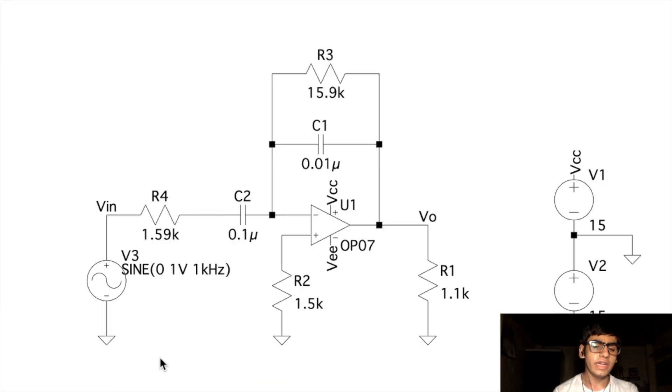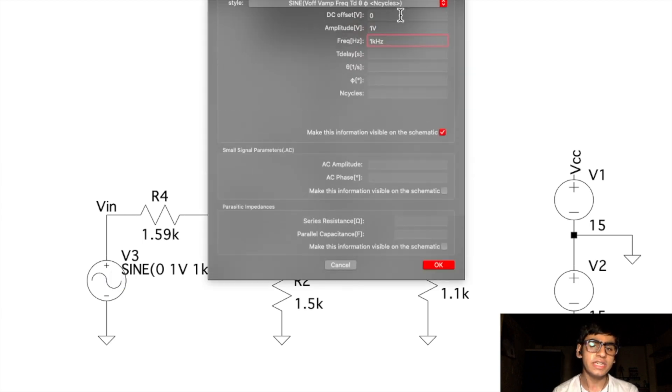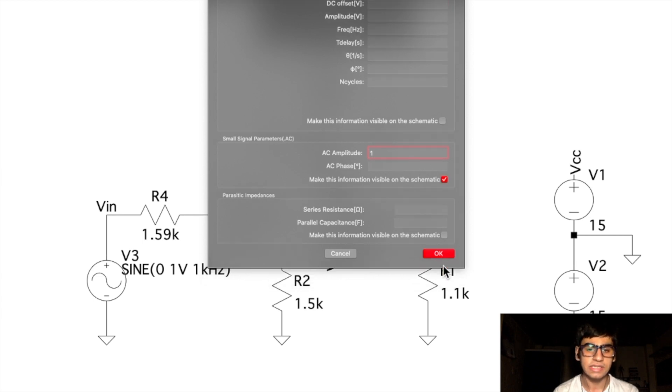So let's get started. Here in LTSPICE we have our normal practical differentiator schematic with the feedback capacitor and the feedback resistance in parallel in the feedback loop and the input capacitor as well as input resistance. Here to get the frequency response, we'll first move to the sinusoidal signal input component, right click on it. We'll delete the normal values of the sinusoidal signal and instead make the AC amplitude 1 under the small signal parameters tab and make this information visible in the schematic.